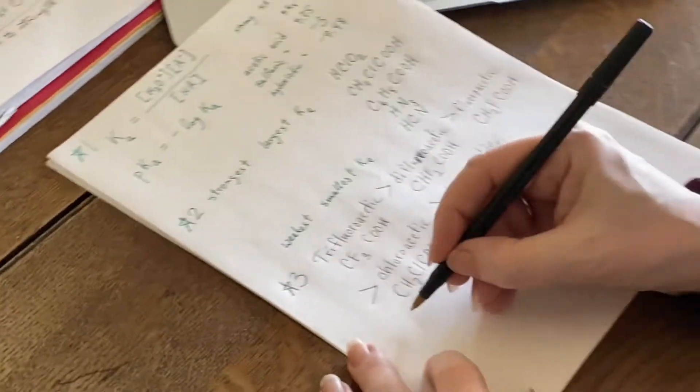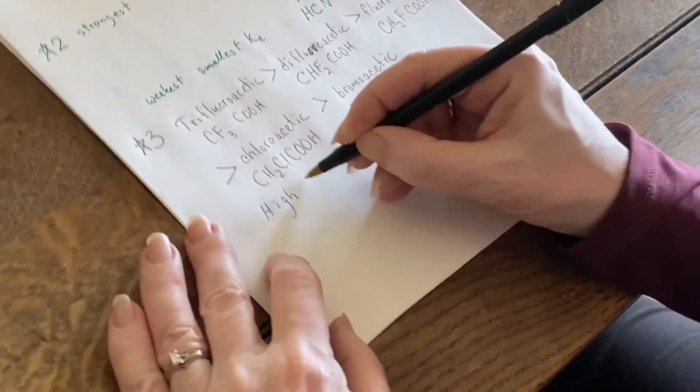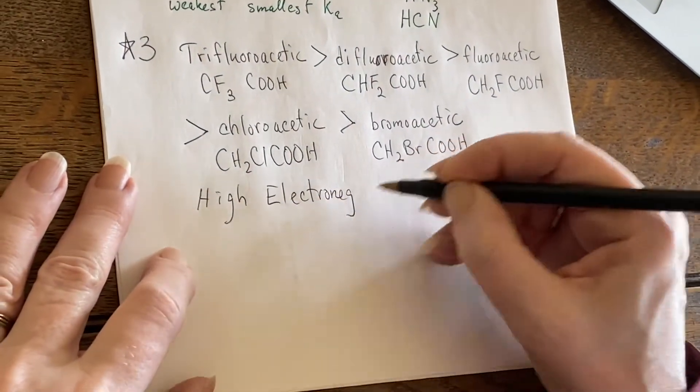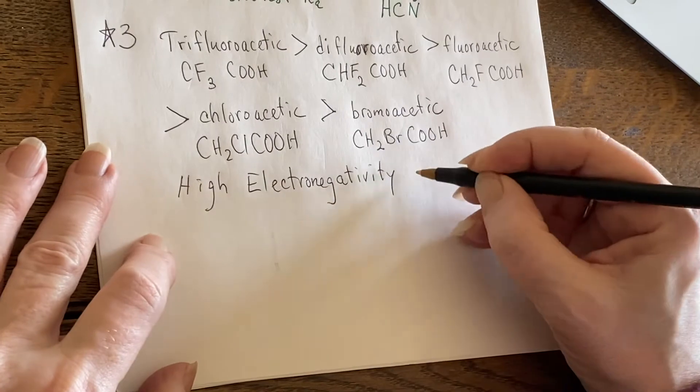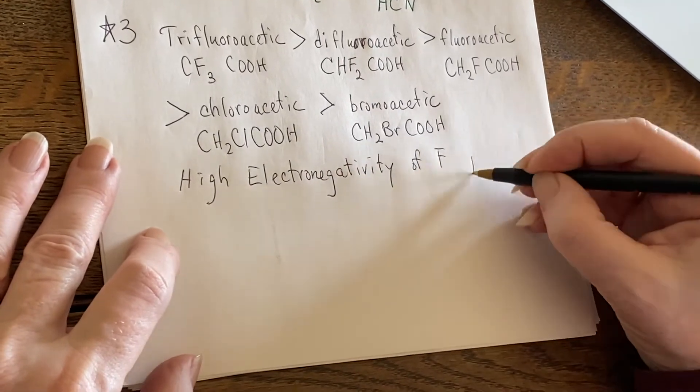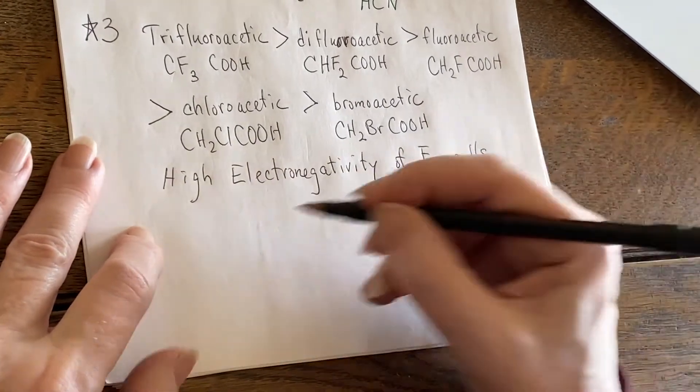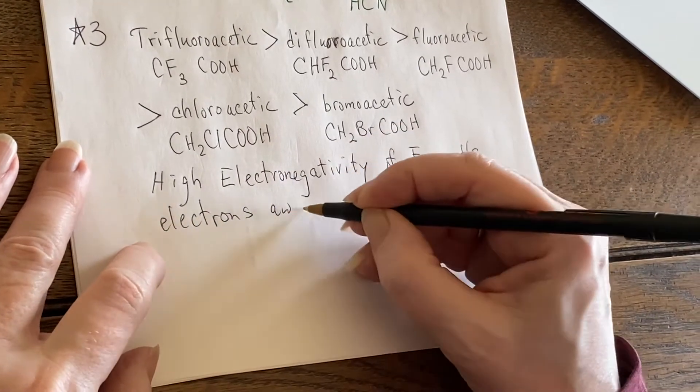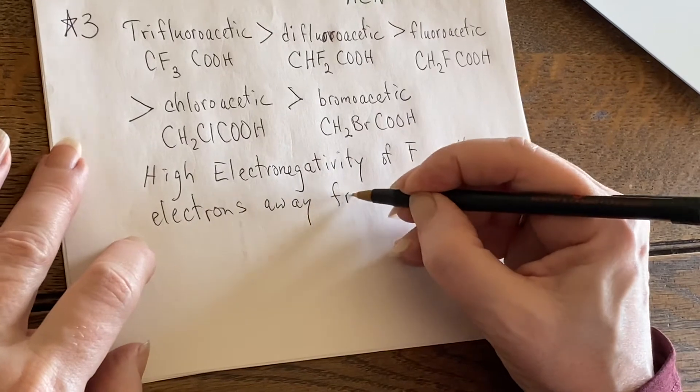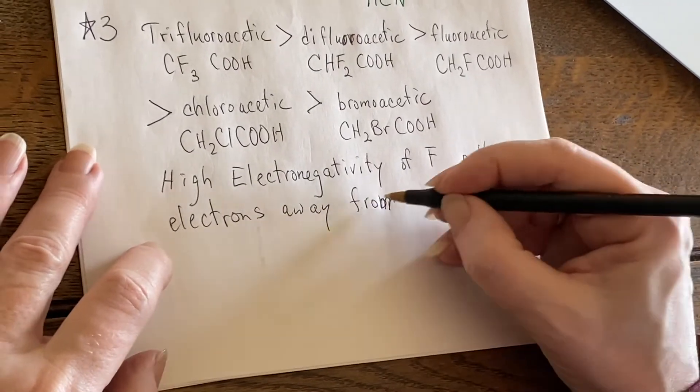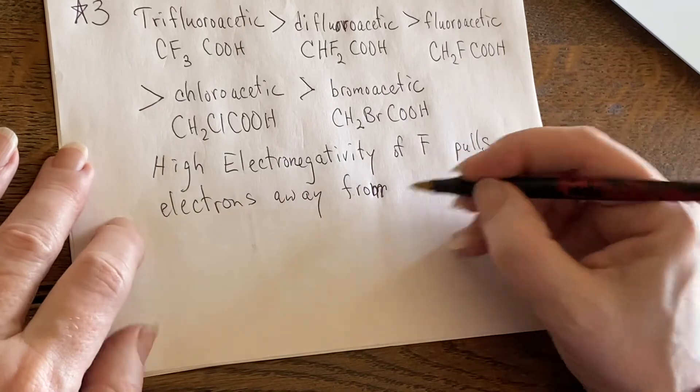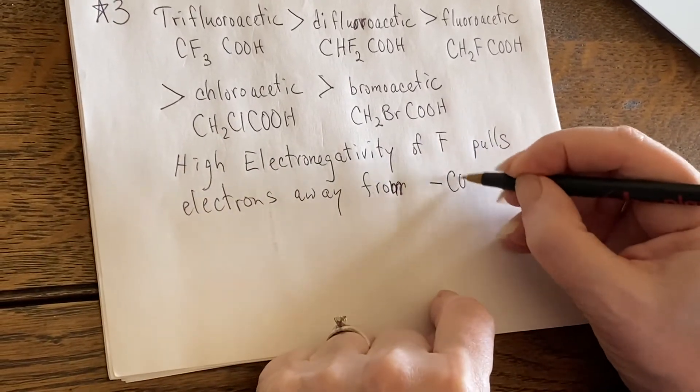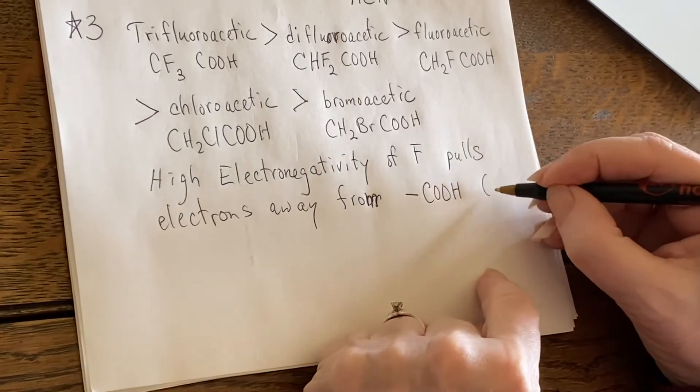And just remember the reason why is the high electronegativity of the fluorine is pulling electrons away from the vicinity of that carboxyl group.